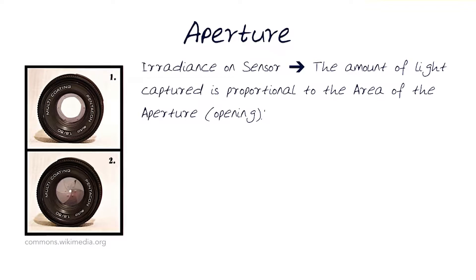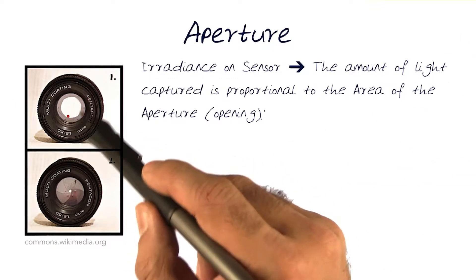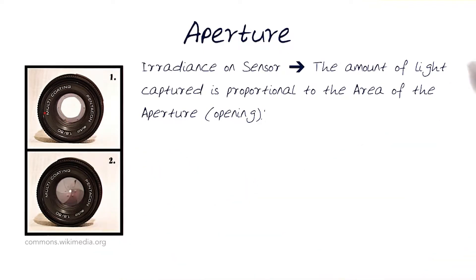As I said before, aperture is basically dependent on irradiance. Irradiance on a sensor is the amount of light captured and is proportional to the area of the aperture opening. The amount of light that's going to go through the aperture depends on how big the area is - small area, larger area.